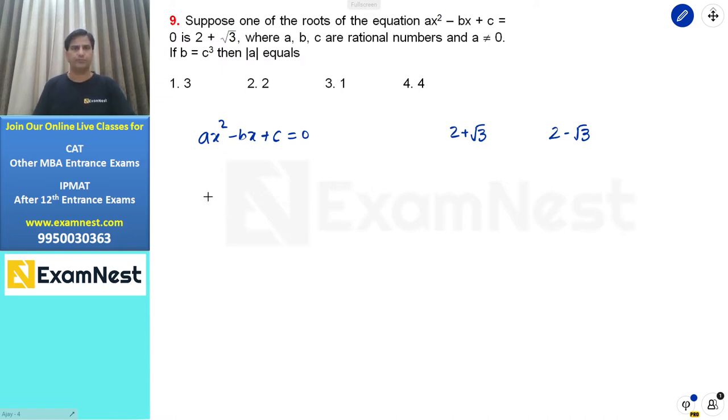Sum of roots and product of roots. If we find the sum of roots, it equals minus the coefficient of x divided by the coefficient of x². Here, that's -(-b)/a, which is b/a.